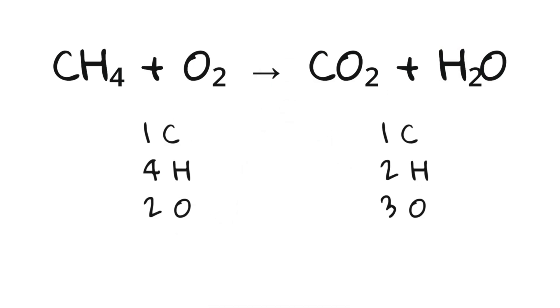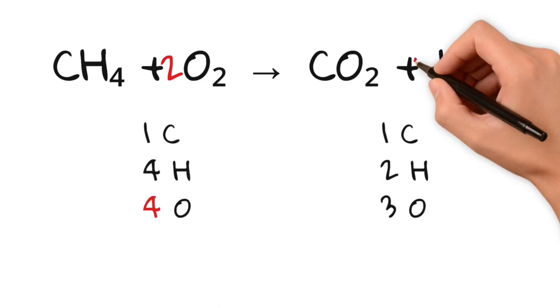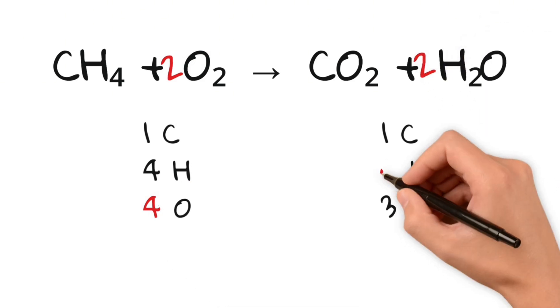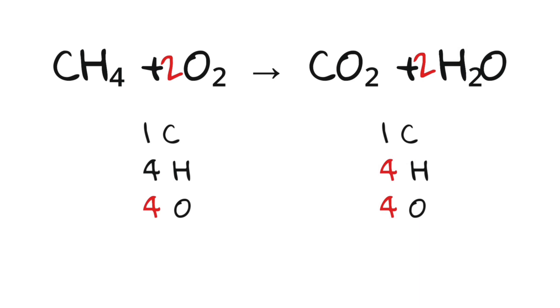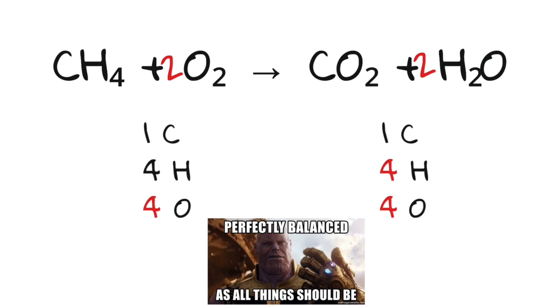We fix this by balancing. By increasing the number of oxygens on the left and the number of water on the right, now both sides have one carbon, four hydrogen and four oxygen. The chemical equation is now balanced.